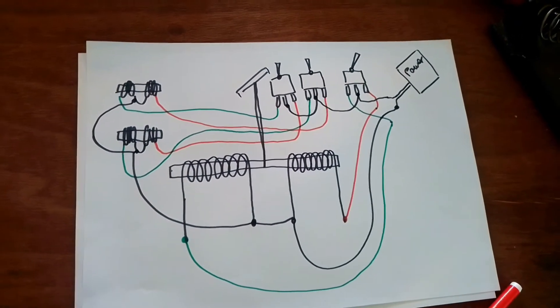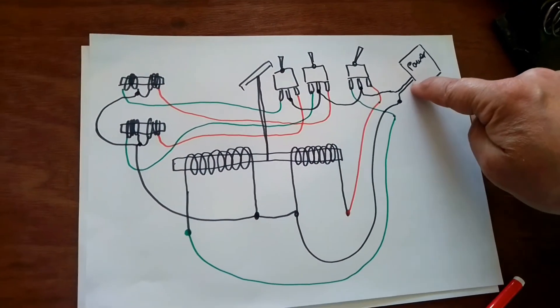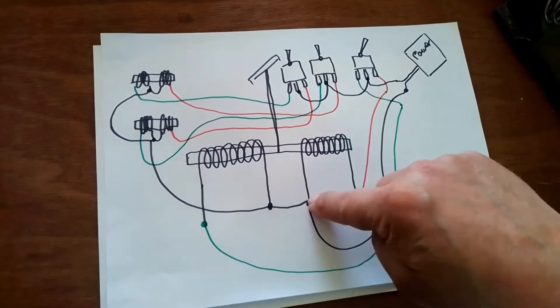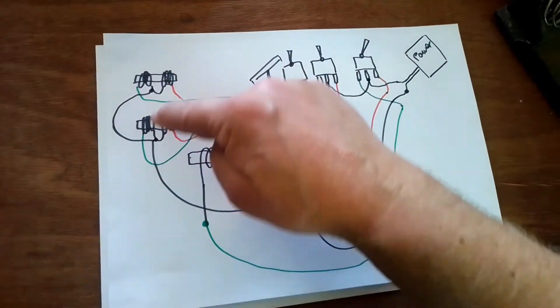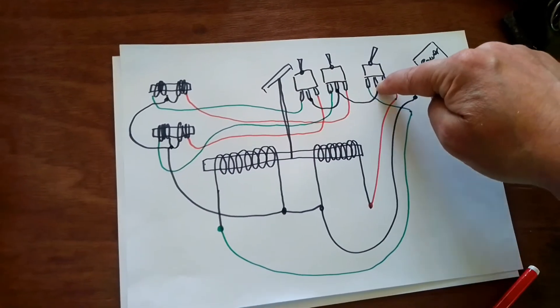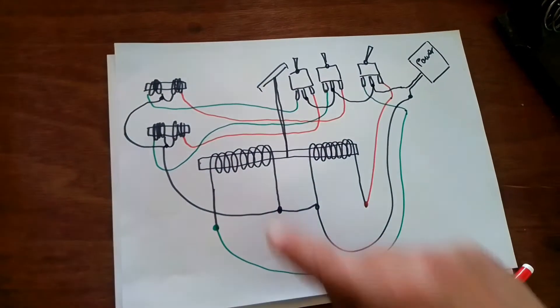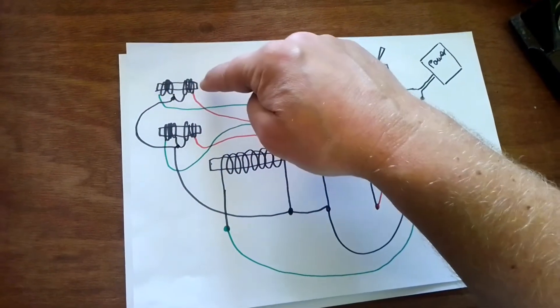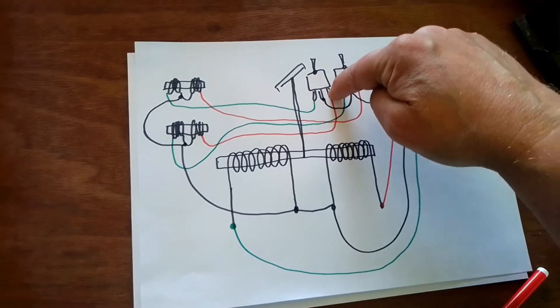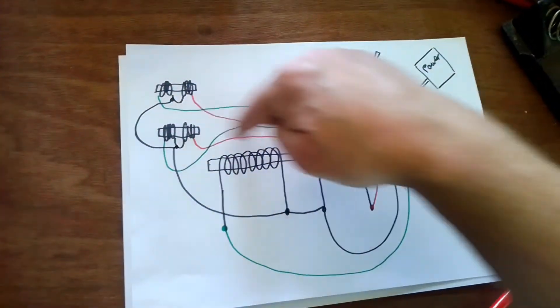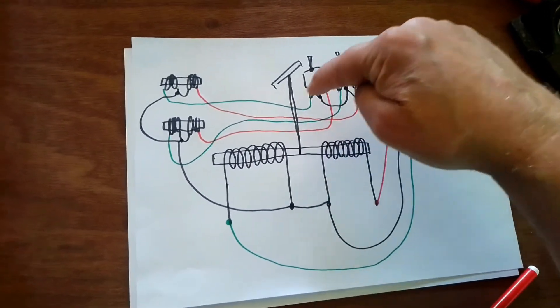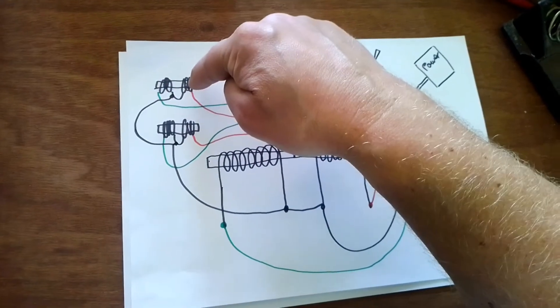So what you've really got to remember is two wires out of the power. One goes to the common connection, which is a link on every single point motor you've got. And the other wire out of the power goes to the center pin, which is a common of every switch. And then that leaves you two spare terminals on the point motors. You've got two spare pins on the switches. So you just connect those together. And obviously, which side you put them on makes the point motor go the opposite way.